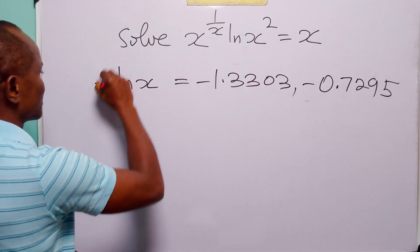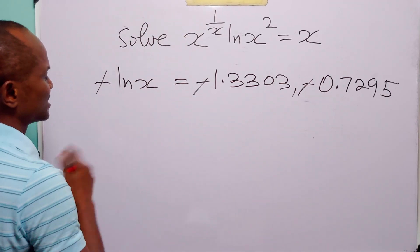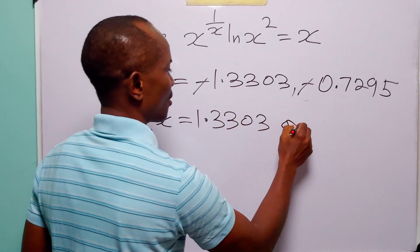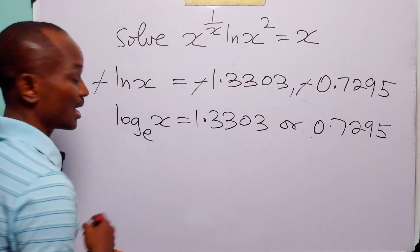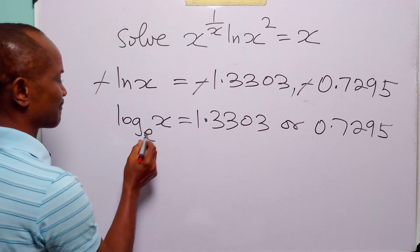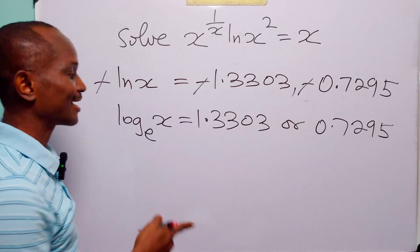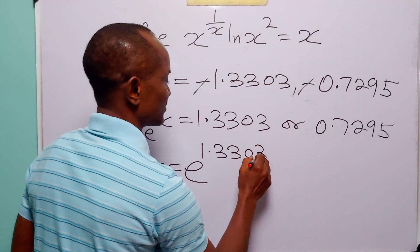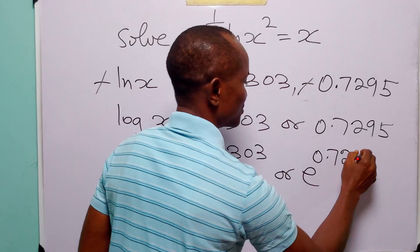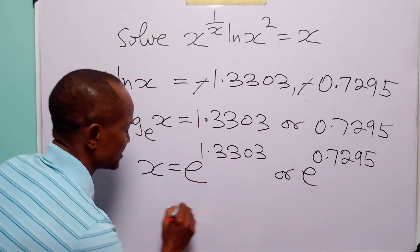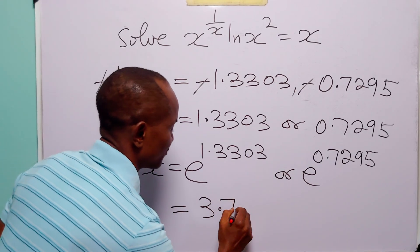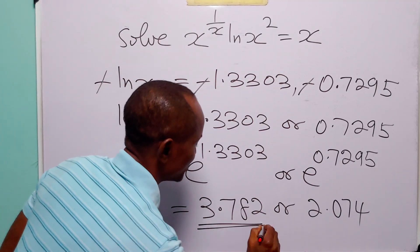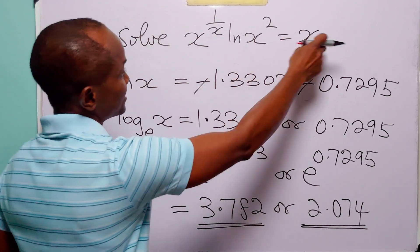Multiplying both sides by minus 1 gives us ln x equals 1.3303 or ln x equals 0.7295. Since this means e to that power equals x, we have x equals e to the power 1.3303 or e to the power 0.7295. From here, x equals 3.782 or x equals 2.074. These are the two values of x that satisfy this logarithmic equation.